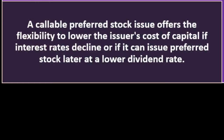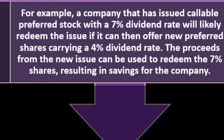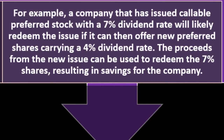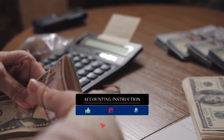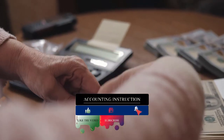Benefits of callable preferred stock — issuer advantages: a callable preferred stock issue offers the flexibility to lower the issuer's cost of capital if interest rates decline or if it can issue preferred stock later at a lower dividend rate. For example, a company that issued callable preferred stock at a seven percent dividend rate will likely redeem the issue if it can offer new preferred shares at four percent. The proceeds from the new issue are used to redeem the seven percent shares, resulting in savings for the company. Conversely, if interest rates rise, the company will not redeem and will continue paying the seven percent.